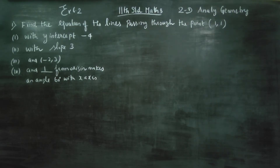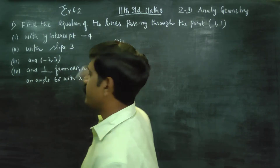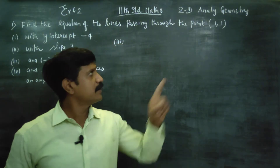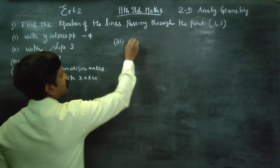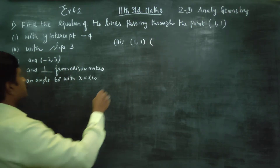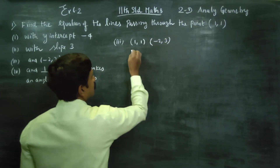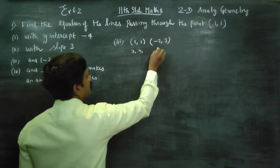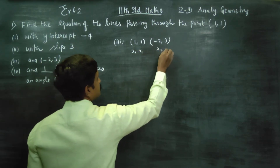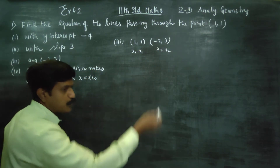Now entering the third subdivision. One point is (−2, 3) and the line passes through (1, 1). We already have two points, so we use the two-point formula.